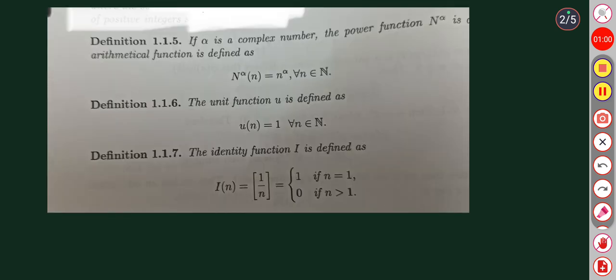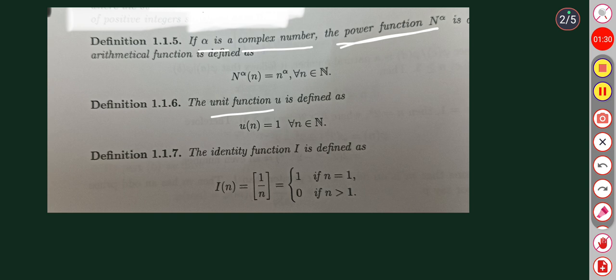Next definition: the power function. For a complex number alpha, the power function n-alpha is an arithmetic function defined as n-alpha of n equals n raised to alpha. Next definition: the unit function. The unit function u is defined as u of n equals 1 for all n.